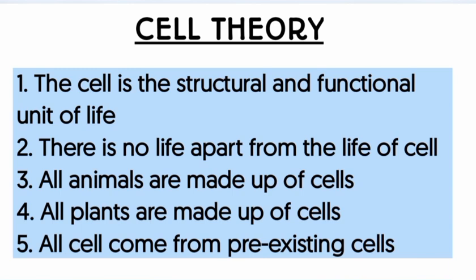The cell theory has five main statements: the cell is the structural and functional unit of life; there is no life apart from the life of a cell; all animals are made up of cells; all plants are made up of cells; all cells come from pre-existing cells. These theories came from different scientists: Theodor Schwann said all animals are made up of cells, Matthias Schleiden said all plants are made up of cells, and Rudolf Virchow said all cells come from pre-existing cells.